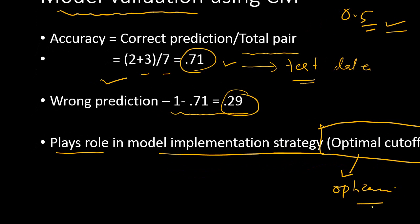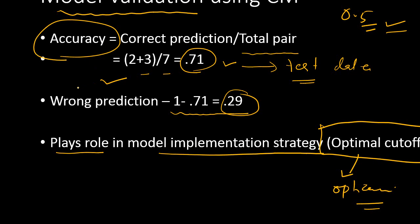You use the optimal cutoff when you implement your model in the real scenario to find out good and bad customers. In reality, all you have are the scores from customers — you apply the optimal cutoff score to categorize them. The cutoff that gives the highest accuracy is the best one, and the confusion matrix really helps you find that.